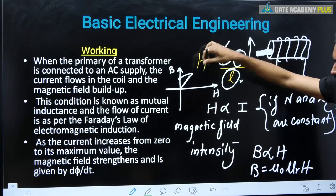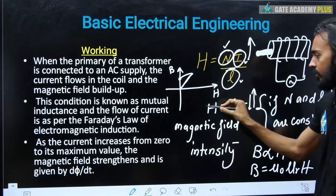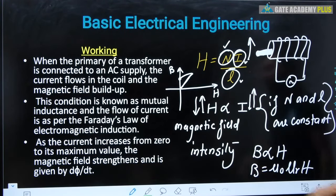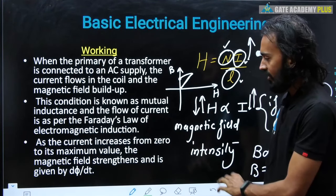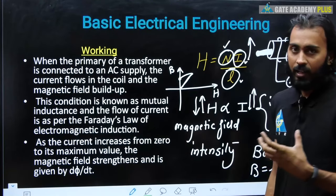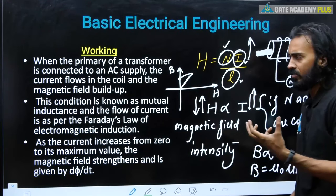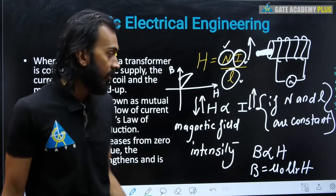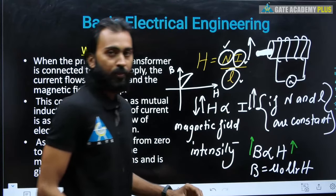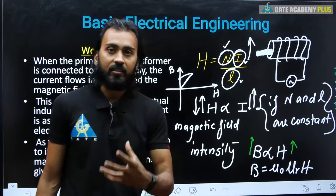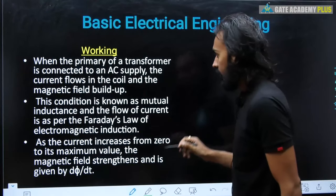From this we can say that the value of H — the magnetic field intensity — is proportional to the supply current. As you increase or decrease the current, corresponding changes appear in H. As the current increases from zero to its maximum value, the magnetic field strengthens. If you increase H, then definitely the value of B — the magnetic flux density — will also increase. Both H and B increase as supply current increases.